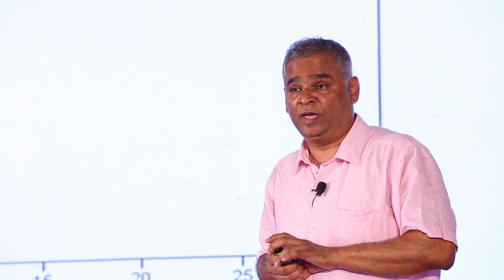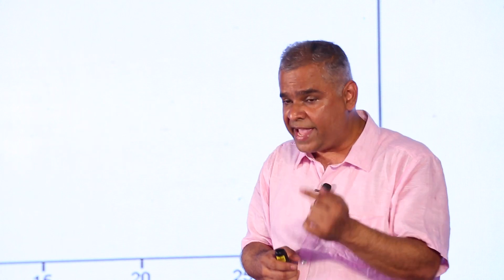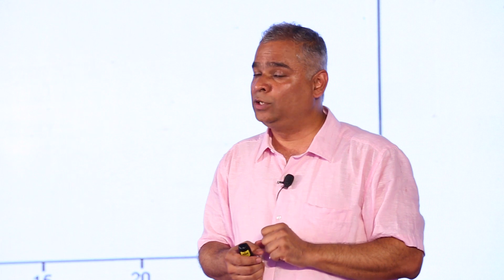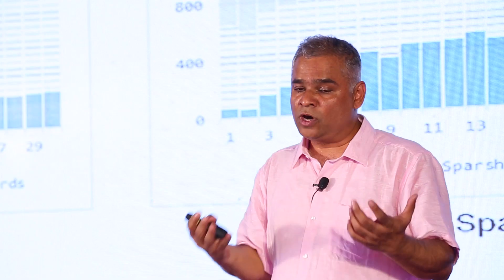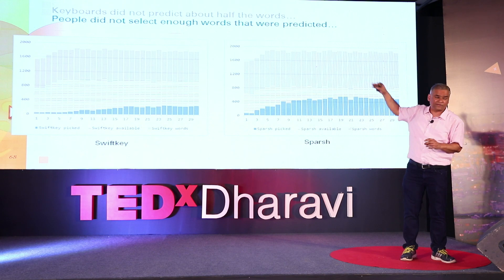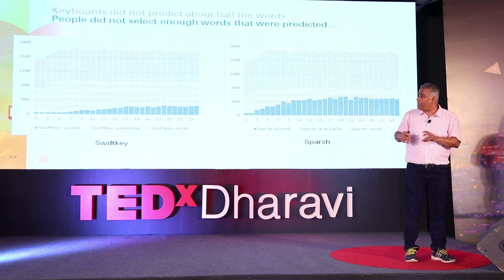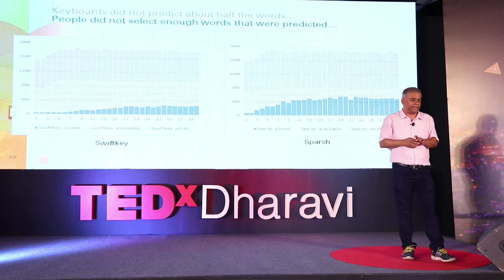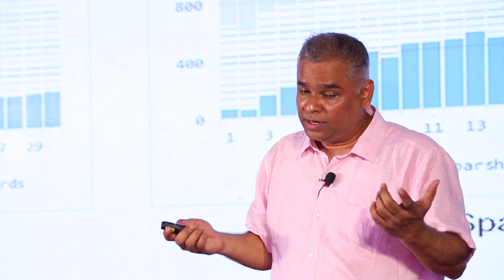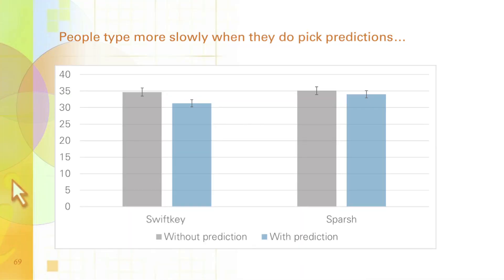However, one thing we were not happy about was adding prediction to Swarachakra, because we saw other keyboards using fantastic prediction systems. We were surprised to find that both keyboards using prediction and the latest technology were actually slower than the others. Keyboards did not predict about half the words, and people did not select even the words that were predicted. In fact, the same person typing without prediction was typing faster than the person using prediction.